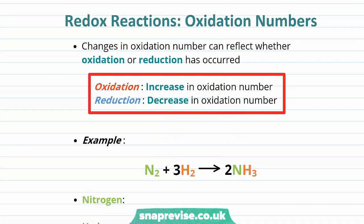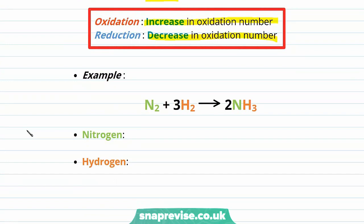Changes in oxidation numbers can reflect whether oxidation or reduction has occurred. Oxidation, the loss of electrons, shows an increase in oxidation number, whereas reduction, the gain of electrons, shows a decrease. Our first example is the reaction of nitrogen with hydrogen to form ammonia. Nitrogen as an uncombined element has an oxidation number of zero, and hydrogen also has an oxidation number of zero.